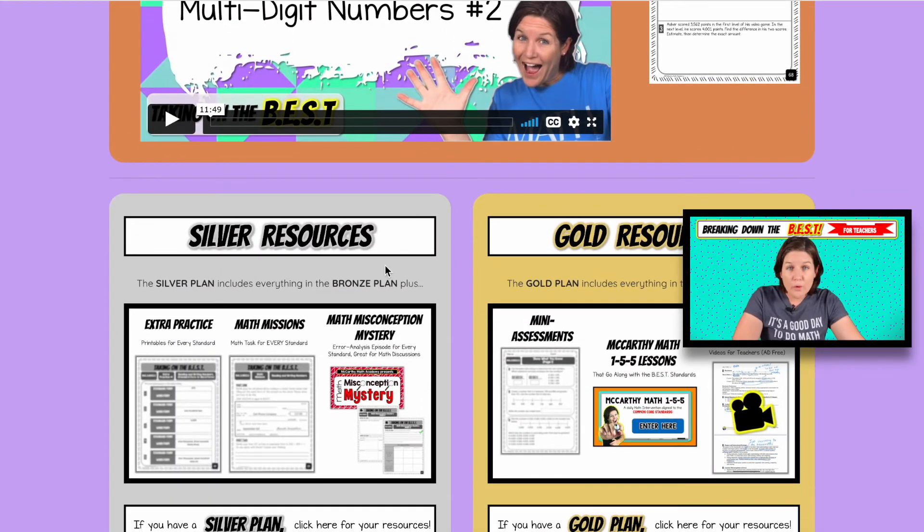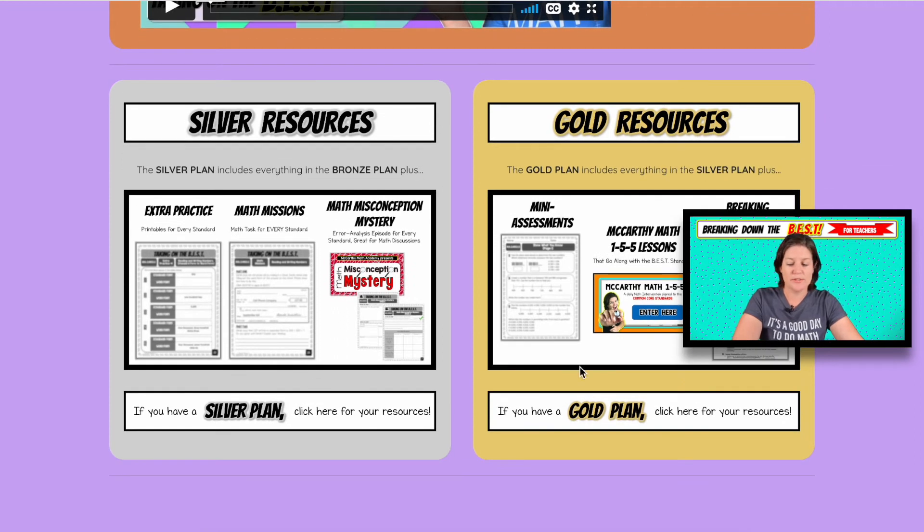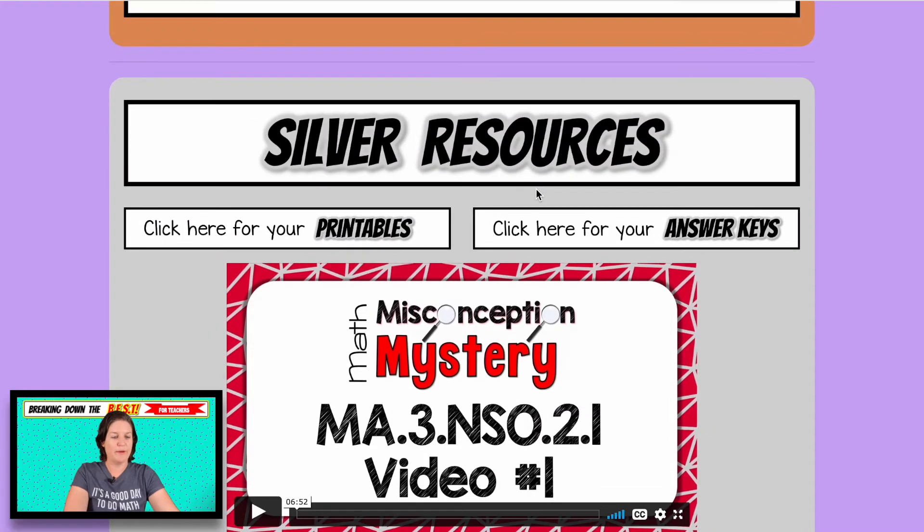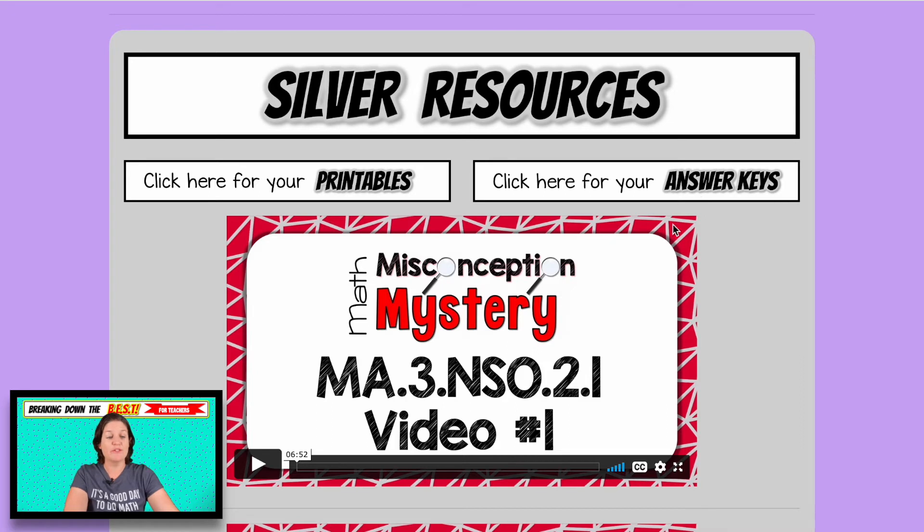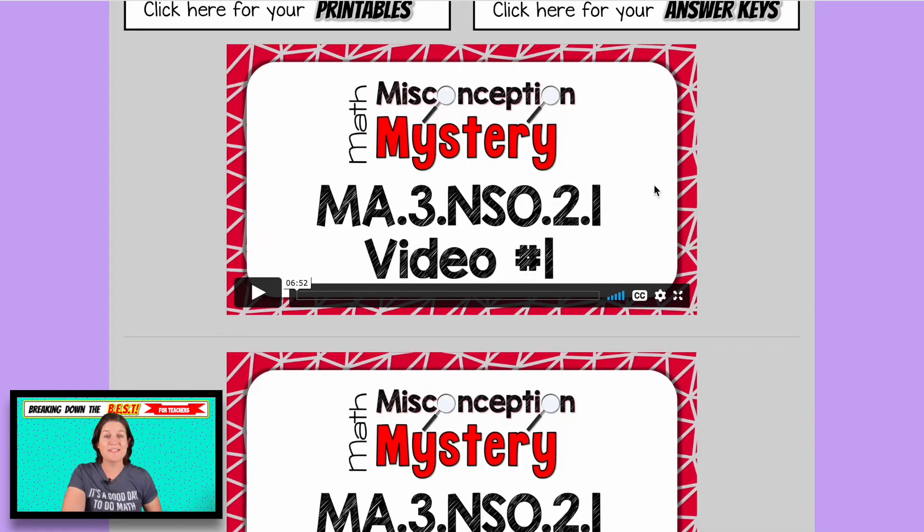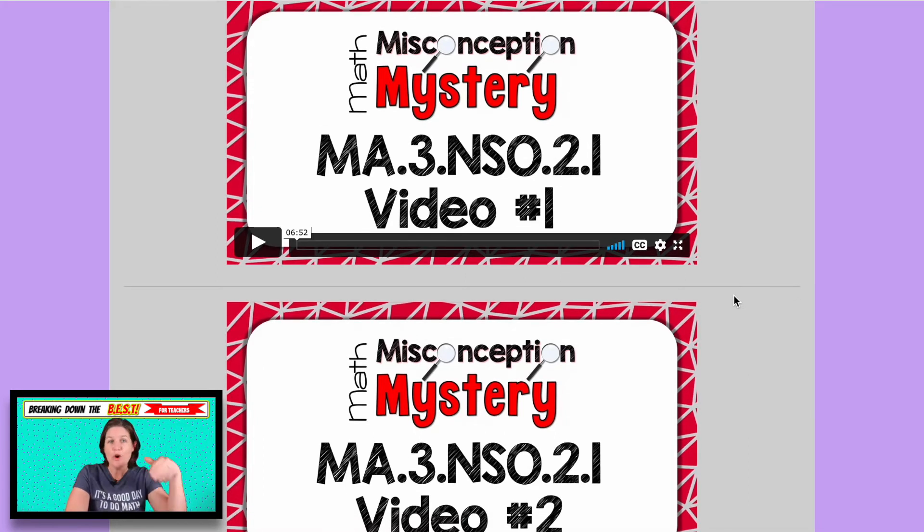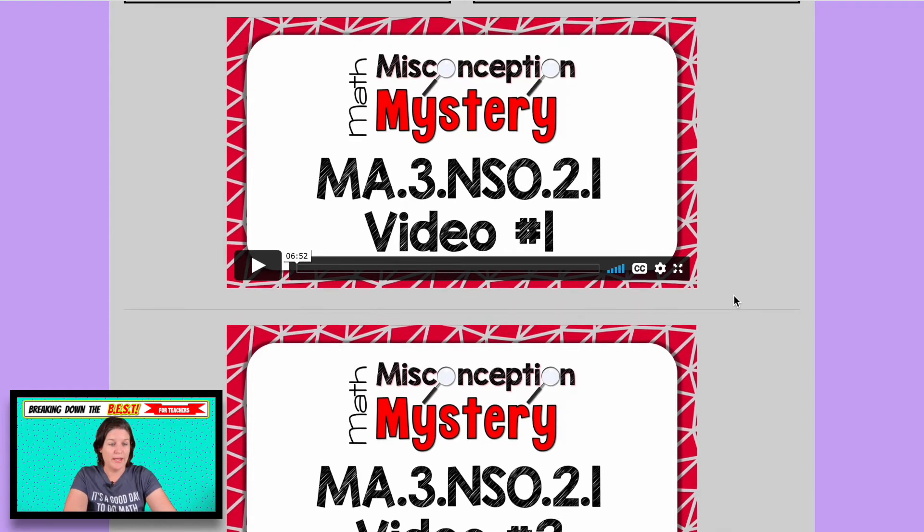If you have the silver or gold membership, you also have access to these resources. So for your silver, you have some more printables, you have answer keys, and you have in this one two math misconception mystery videos here. These math misconception mystery videos are a lot of fun. The whole premise is I dress up as four different characters. Three of them do something to make a mistake. They make a common mistake that students usually make. One of them is correct and students then get to play detective and figure out who solved it right. What did the characters do incorrectly? And they file their detective report.